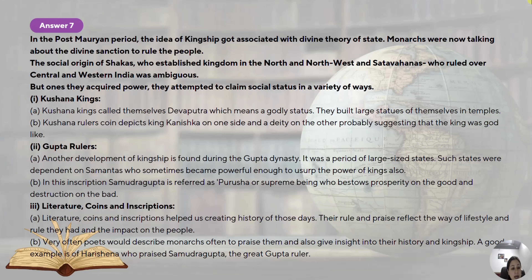Studying the Kushanas and Guptas: the Kushanas called themselves Devaputra. It is believed the Kushanas came from Central Asia, somewhere near China, and they adopted the title of Devaputra, meaning 'son of God' — a godly status. They built large statues of themselves in temples to get divinity. Kushana rulers' coins depict King Kanishka on one side and a deity on the other, probably suggesting that the king was godlike. These were some of the steps taken by kings to establish divine kingship.